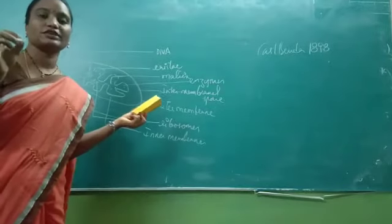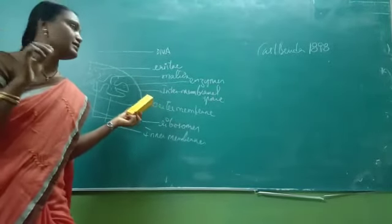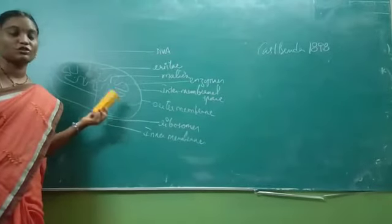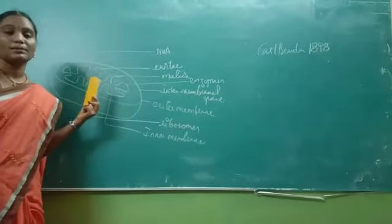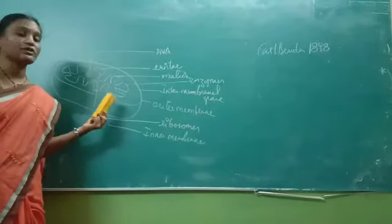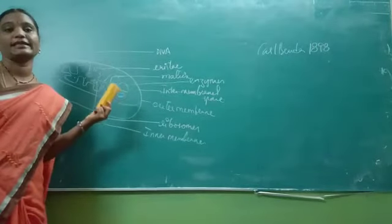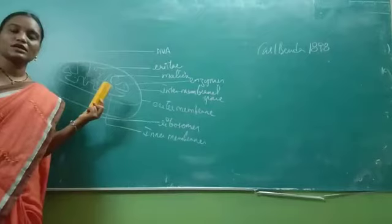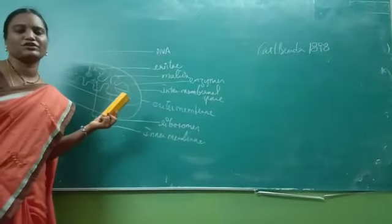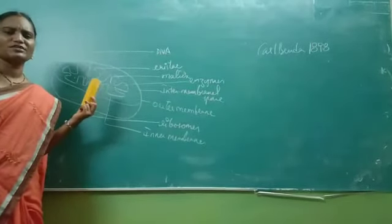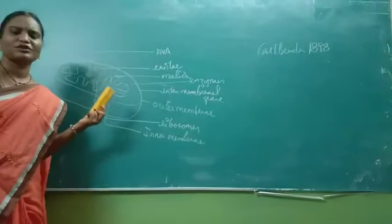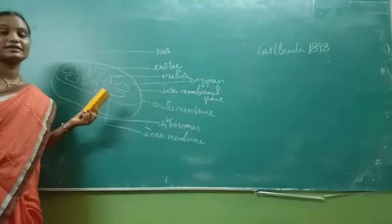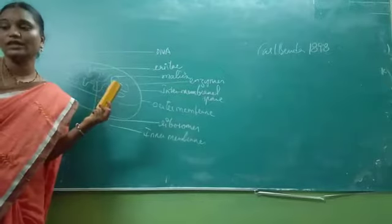Mitochondrial DNA is very important during maternal DNA transmission. Coming to the composition of mitochondria: it is composed of DNA, RNA, lipid, and protein molecules. As for the important functions, mitochondria performs a very important role during the synthesis of ATP, and hence it is known as the powerhouse of the cell.